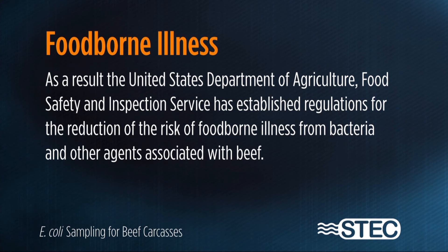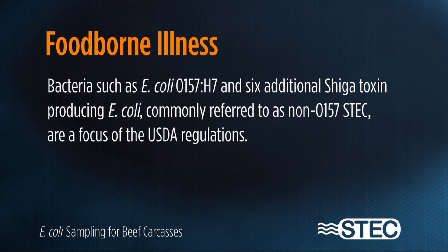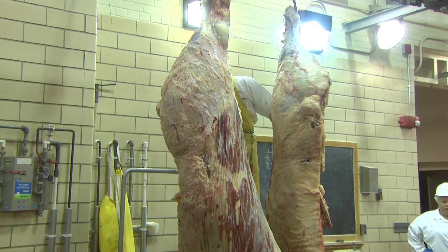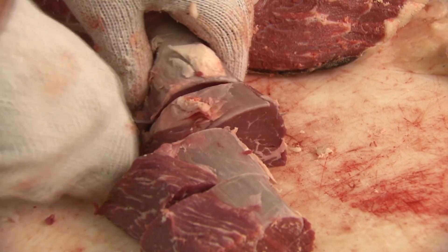The United States Department of Agriculture Food Safety and Inspection Service has established regulations for the reduction of the risk of foodborne illness from bacteria and other agents associated with beef. Bacteria such as E. coli O157:H7 and six additional shiga toxin-producing E. coli, commonly referred to as non-O157 STEC, are a focus of the USDA regulations. In addition, the concern for these bacteria has also prompted beef slaughter and processing operations to consider food safety a high priority for their business.